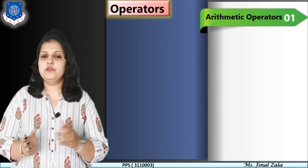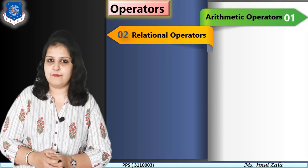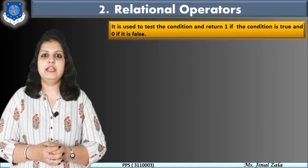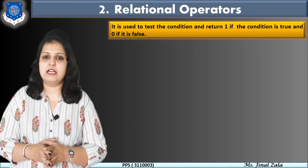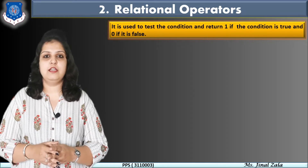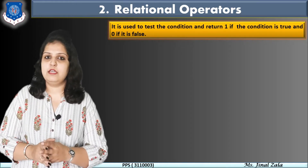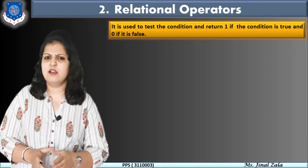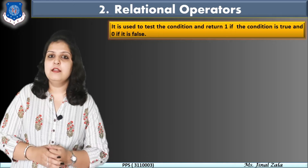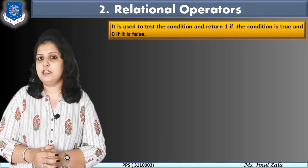Now let's move to the second operator — the relational operator. What is a relational operator? It is used to test a condition and returns 1 if the condition is true, and returns 0 if the condition is false. We can't directly use these relational operators — they are always used in conditional statements.